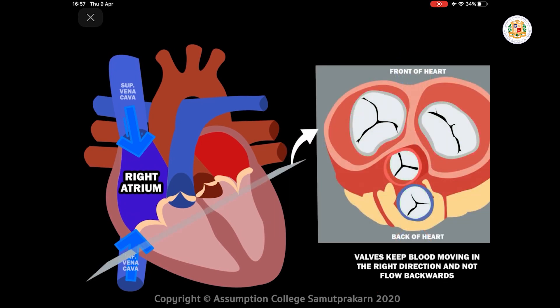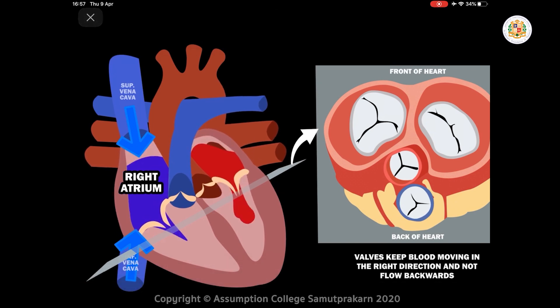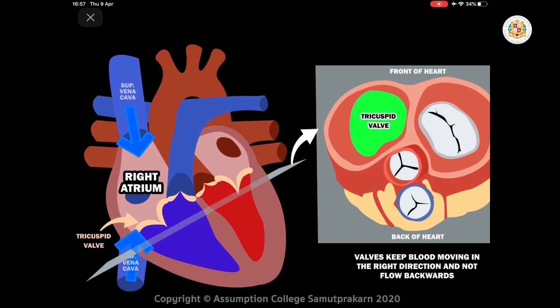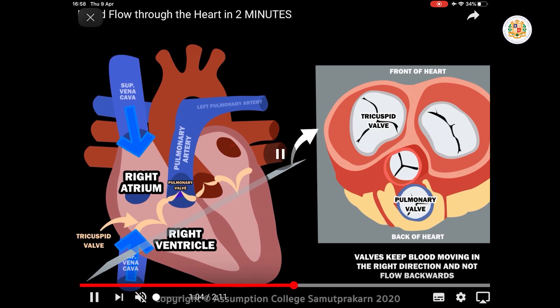The blood passes through a valve. The function of a valve is to keep blood moving in the right direction, not backwards. The valve separating the right atrium and right ventricle is called the tricuspid valve — it is called that because it has three lobes. After that, blood moves to the right ventricle, which contracts and pumps the deoxygenated blood out.